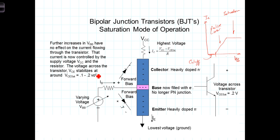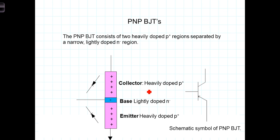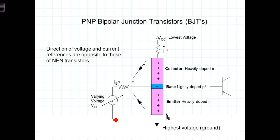Our discussion about transistors thus far has referred to an N-P-N transistor, where the collector and emitter were heavily doped with N-type dopants and the base was doped with a very narrow P-type dopant. There is also a P-N-P transistor, which is essentially the opposite structure: the collector and emitter are heavily doped with P-type dopants, and the base is again very narrow and lightly doped, but this time with an N-type dopant. In the P-N-P transistor, we still have P-N junctions representing two back-to-back diodes, but this time referenced P-to-N and P-to-N.